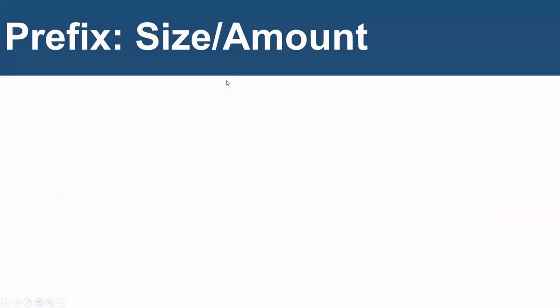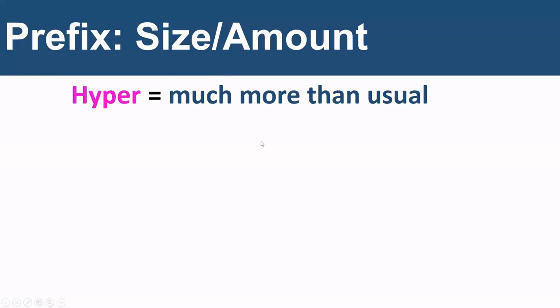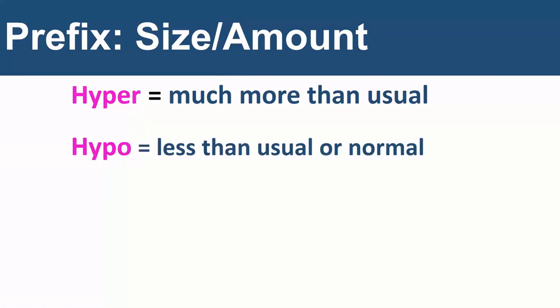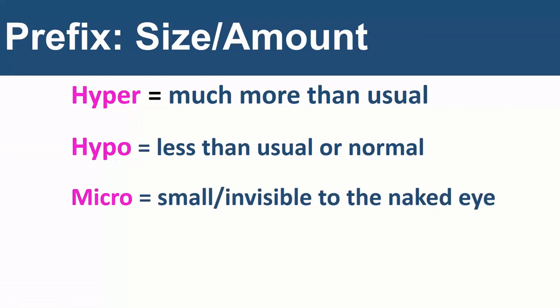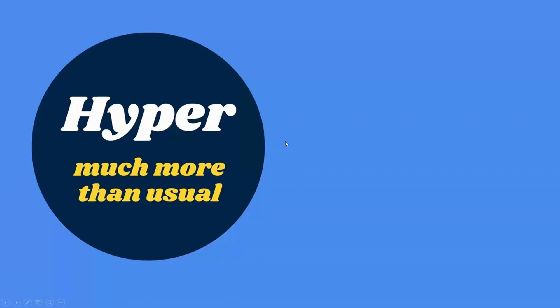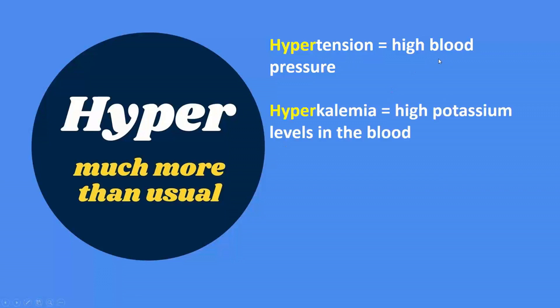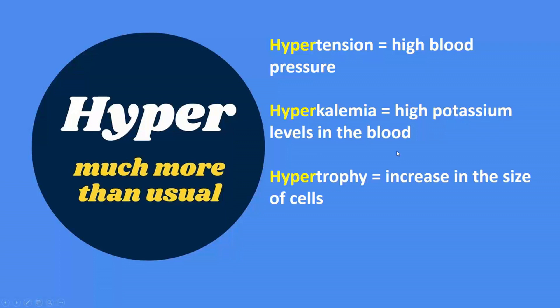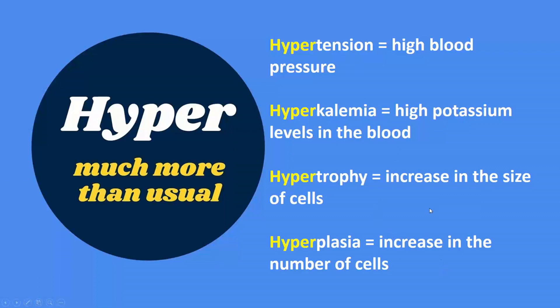Prefixes that relate to size or amount: Hyper means more than usual. Hypo means less than usual. Micro means small or invisible to the naked eye. Macro means large or visible to the naked eye. Examples of the hyper prefix: hypertension is high blood pressure, hyperkalemia is high potassium level in the blood, hypertrophy is increase in the size of cells, hyperplasia is increase in the number of cells.